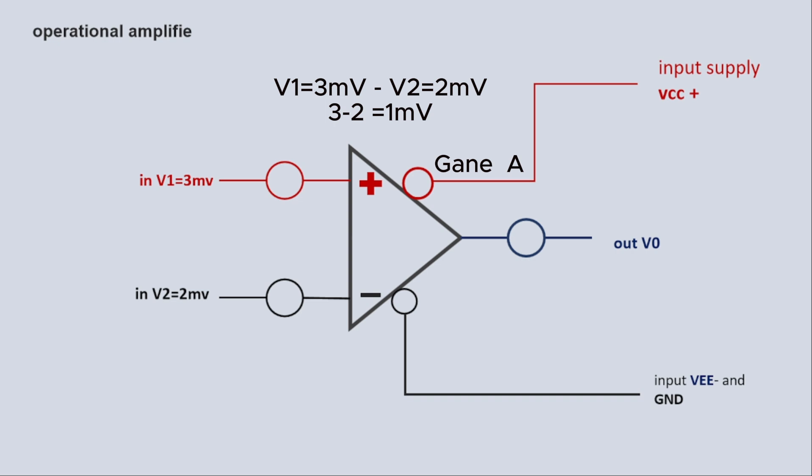Gain is shown with an A. Here it will be A, which means it is gain. And we understand that the signal will be amplified according to the gain.